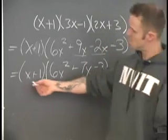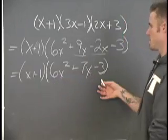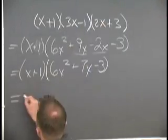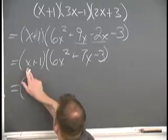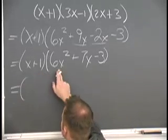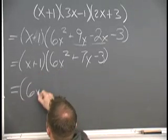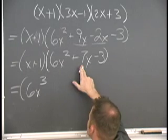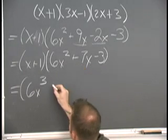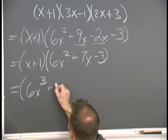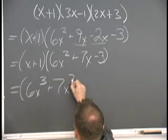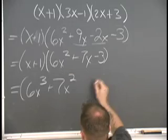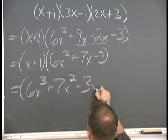Now we're going to multiply this x plus 1 through here. So that's x times 6x squared, which gives us 6x cubed. x times negative 3 gives us negative 3x.